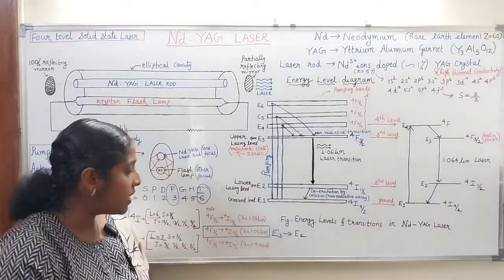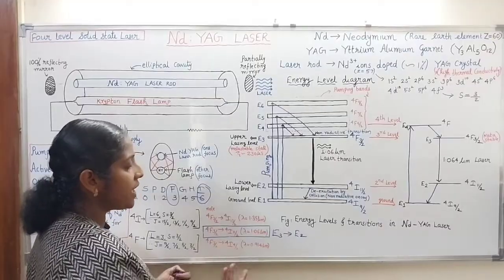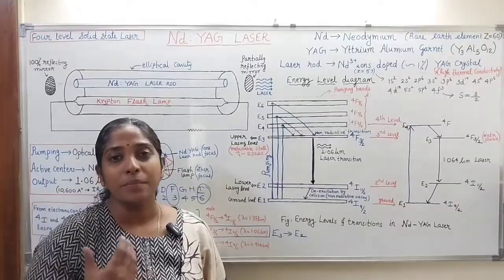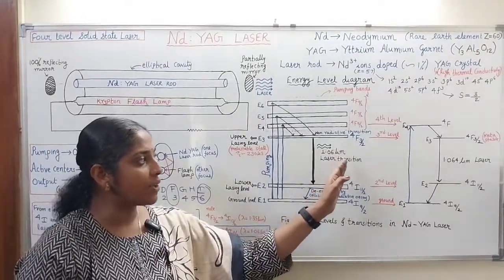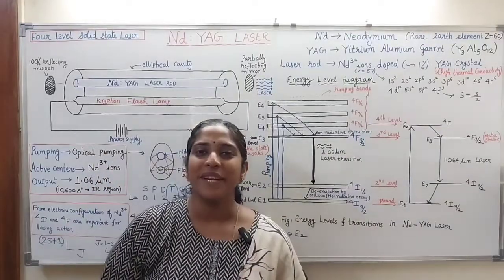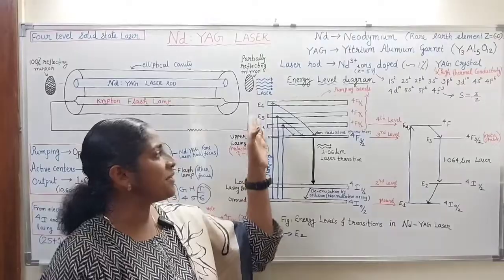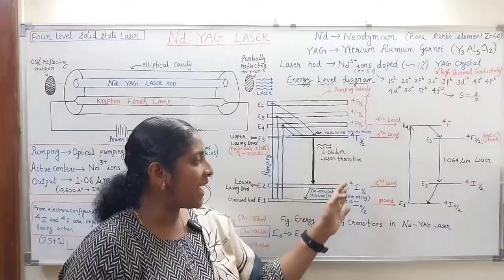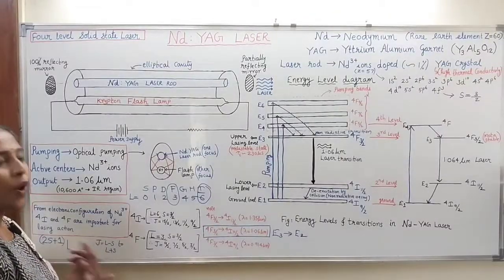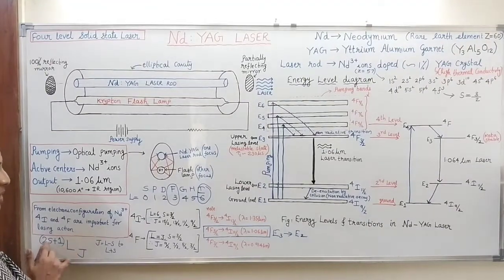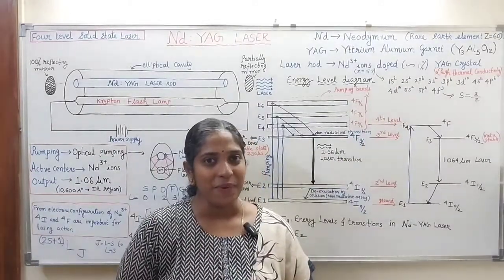Other laser transitions are also possible: from 4F₃/₂ to 4I₁₃/₂ produces a wavelength of 1.35 micrometers, and from 4F₃/₂ to 4I₉/₂ also produces laser radiation, but the probability of these is much lower. The dominant laser output is 1.06 micrometers in the infrared region. To fully analyze these levels using spectral terms, knowledge of spectroscopy — including orbital angular momentum, spin angular momentum, and total angular momentum — based on the electronic configuration is required.